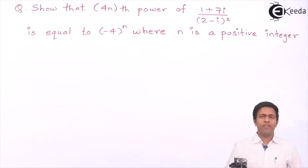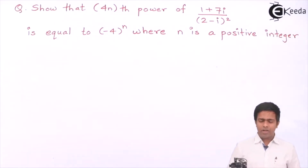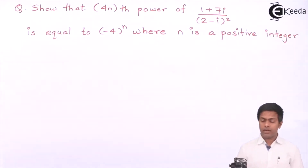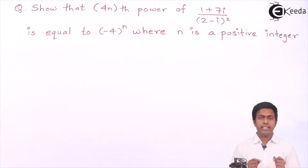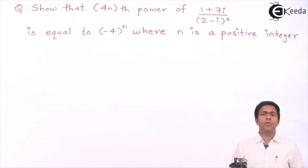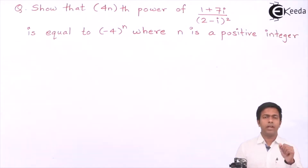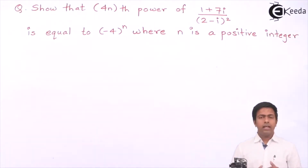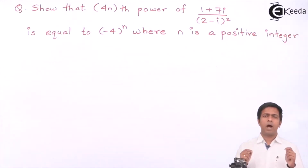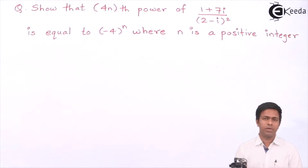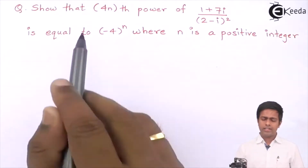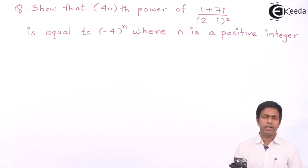Today we are going to solve a problem based on De Moivre's theorem. We have to show that the 4nth power of (1 + 7i) / (2 - i), the whole square, is equal to minus 4 raised to n, where n is a positive integer. We use De Moivre's theorem whenever we want to find out the power of a complex number.